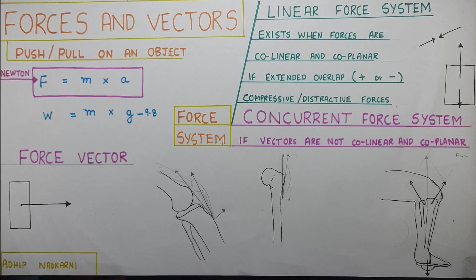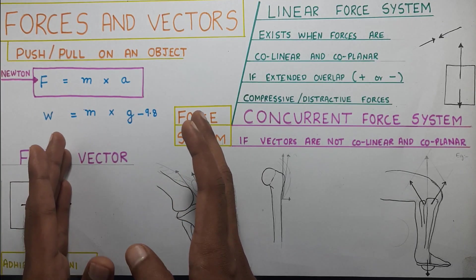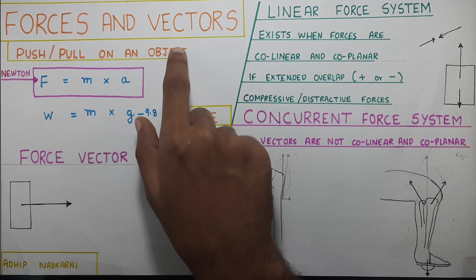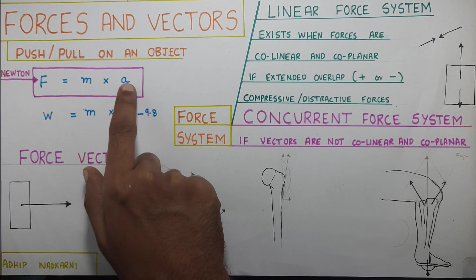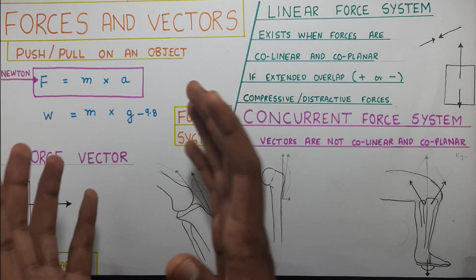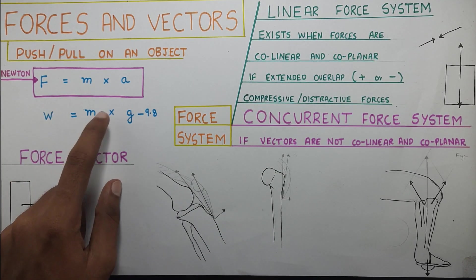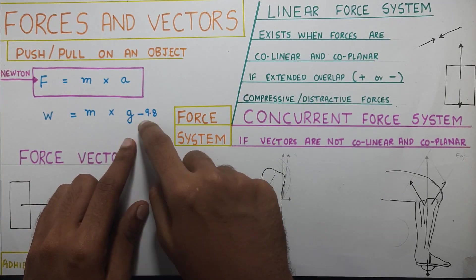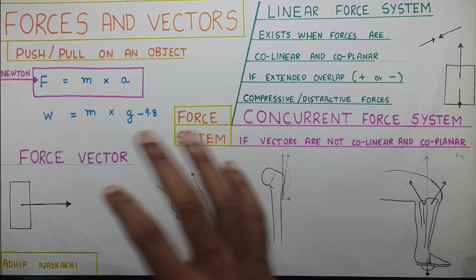So let's start with force. What is force? Force is a push or a pull on an object. When you convert this into a formula, you get F equals M times A, where M is the mass of the object and the push or pull becomes the acceleration. Force is measured in Newtons. Taking a more practical approach, weight is the mass of our body times the Earth's gravitational pull, which is 9.8 G.